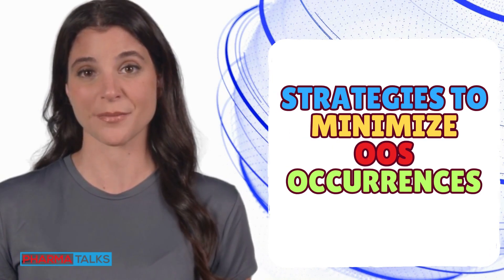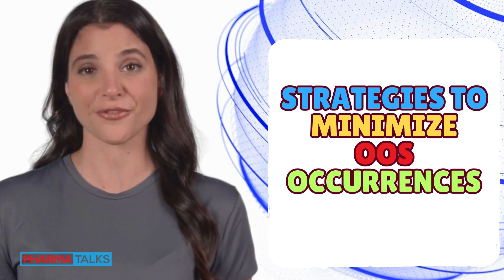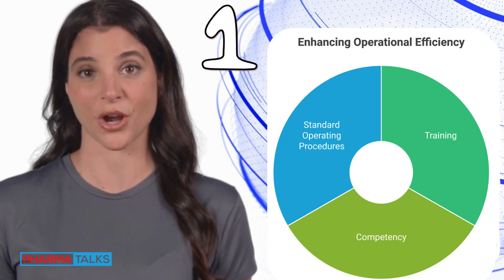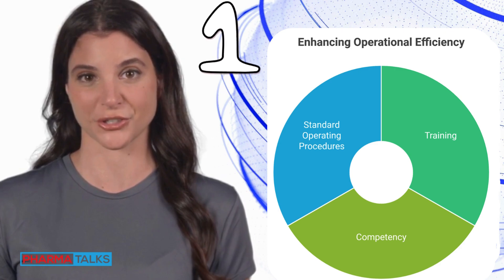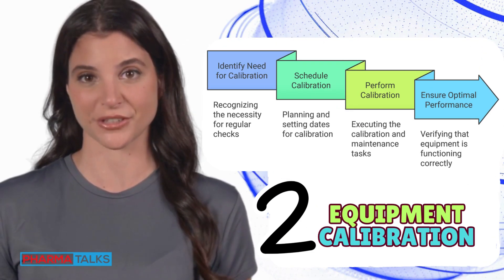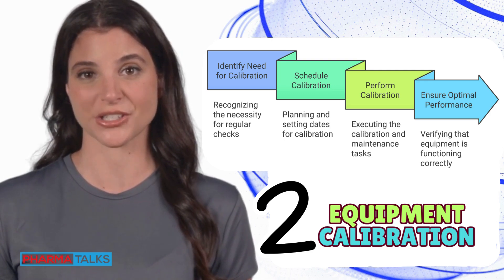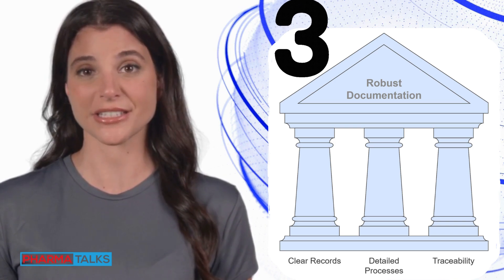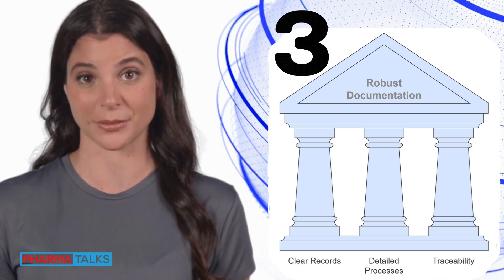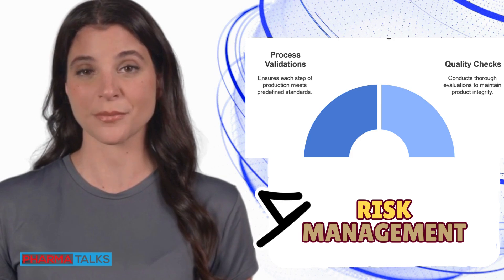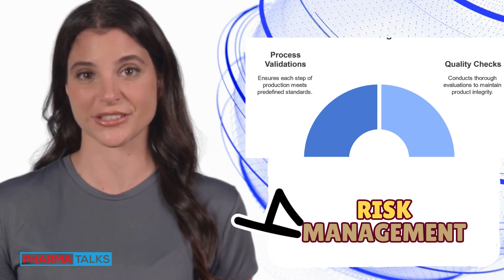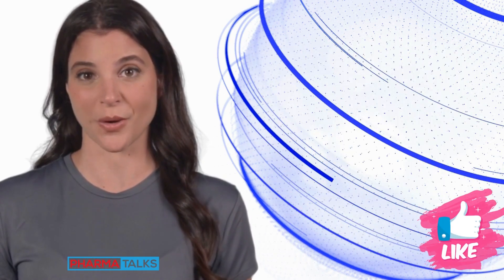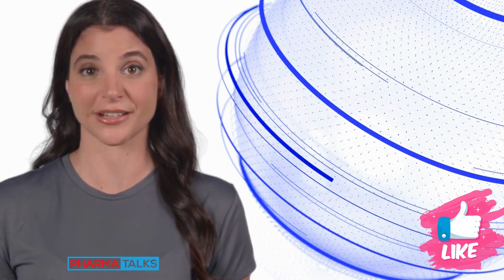So how can we control and minimize OOS occurrences? Here are a few key strategies: 1. Training and Competency — ensuring analysts and operators are well-trained and follow standard operating procedures precisely. 2. Equipment Calibration — regularly maintaining and calibrating instruments to avoid inaccuracies. 3. Robust Documentation — maintaining clear and detailed records of all processes to ensure traceability. 4. Risk Management — implementing preventive measures like process validations and robust quality checks at every stage. By addressing these areas, we can not only minimize OOS results but also strengthen overall quality assurance and compliance.